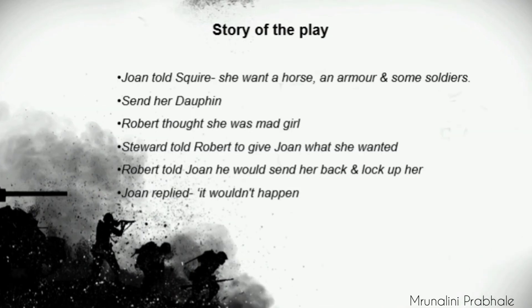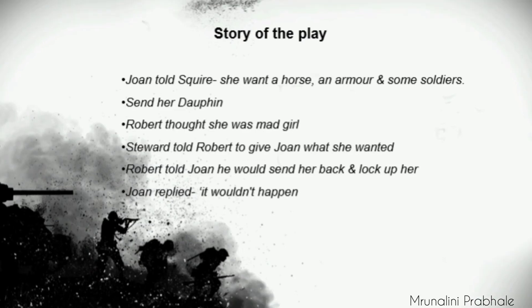Look at the next slide - story of the play. Joan told the squire to give her a horse, armor, and some soldiers and send her to the Dauphin. On hearing this, Robert angrily asked the steward why he had not told him that she was mad - Robert thinks that Joan was mad. The steward told Robert to give Joan what she wanted. Robert then told Joan that he would send her back to her father with orders to lock her up.